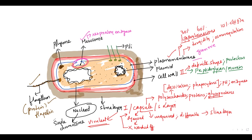Remember that in eukaryotes, in order to pack your DNA, we have histones. But since bacteria is a prokaryote and has only a single chromosome, the DNA does not have any packing proteins. So we say there are no histone proteins in your bacteria.